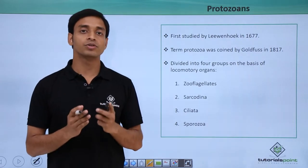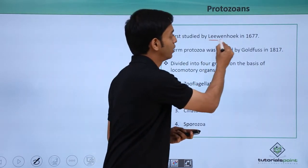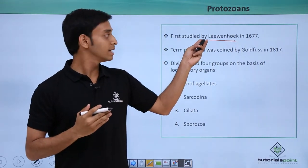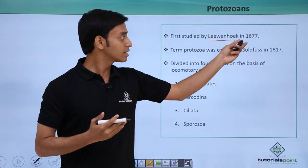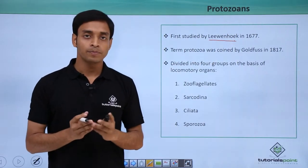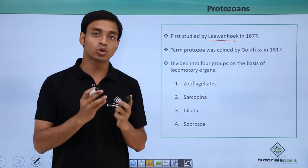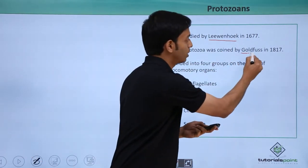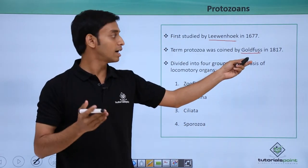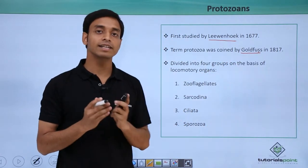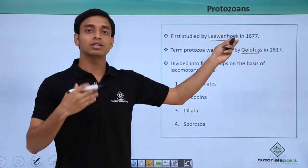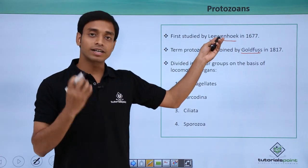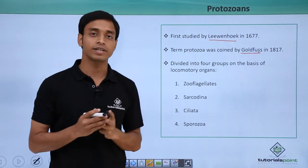These are the organisms which were first studied by the famous scientist Leeuwenhoek — a name we have encountered previously. He studied this group of organisms in 1677. The name 'protozoans' was later coined by another scientist named Goldfuss, and this naming was done in the year 1817 — quite many years after Leeuwenhoek's initial studies.